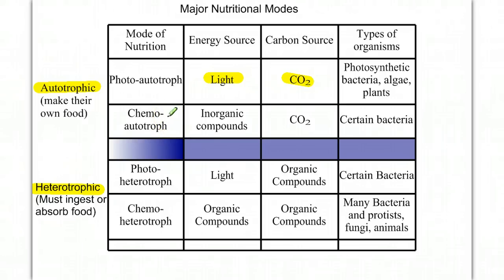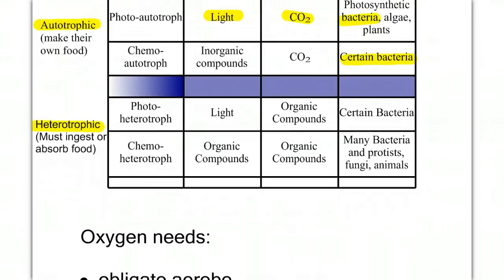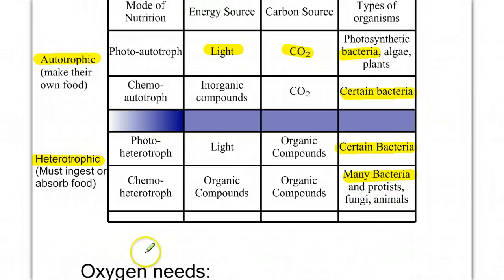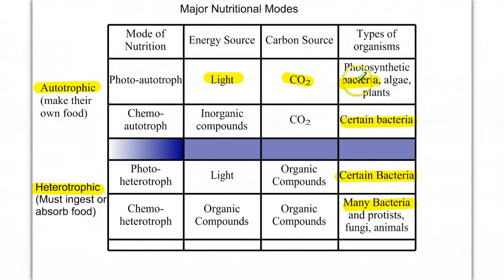Chemoautotrophs are found only among bacteria. Their energy source comes from inorganic chemical reactions, and they still use carbon dioxide as their carbon source. Photoheterotrophs use light as their energy source but require organic compounds as their carbon source — certain bacteria can do this. Chemoheterotrophs must gain energy through organic compounds; they have to eat or absorb food. Here we find bacteria, many protists, fungus, and animals. Notably, bacteria appear in all four metabolic categories, showing remarkable metabolic diversity.